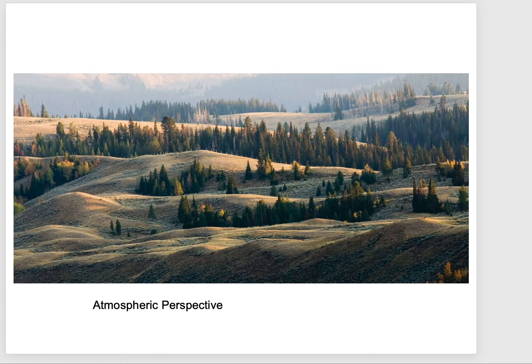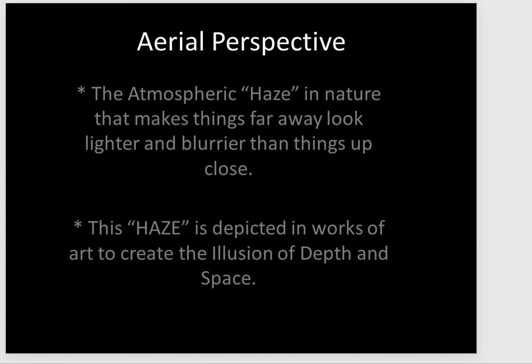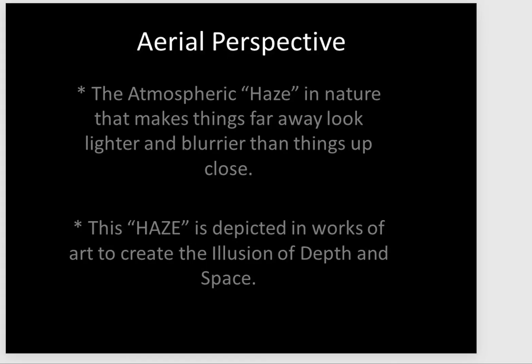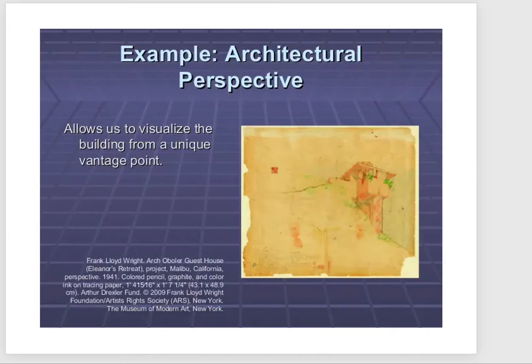We have what's called atmospheric perspective, which tells you three things: what is in the distance is going to be lesser in contrast — not as dark — it will be hazy and slightly out of focus, and it will be bluer, cooler in color. We'll talk a little about color theory next time. Aerial perspective is another term for the same thing — it's lighter, it's blurrier, and it generally gets a little bluer as it moves away from you into the background.